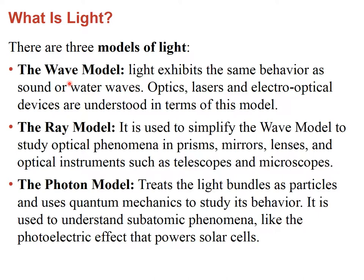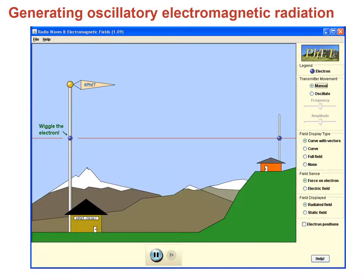The wave model can be simplified using the ray model, which represents wave propagation using arrows. There is an application posted on Blackboard — by running it, you can move an electron up and down to create an electric field that propagates to a solar antenna, moving electrons up and down. It can be operated manually or automatically, and you can change the frequency and amplitude of oscillation to help visualize wave propagation.